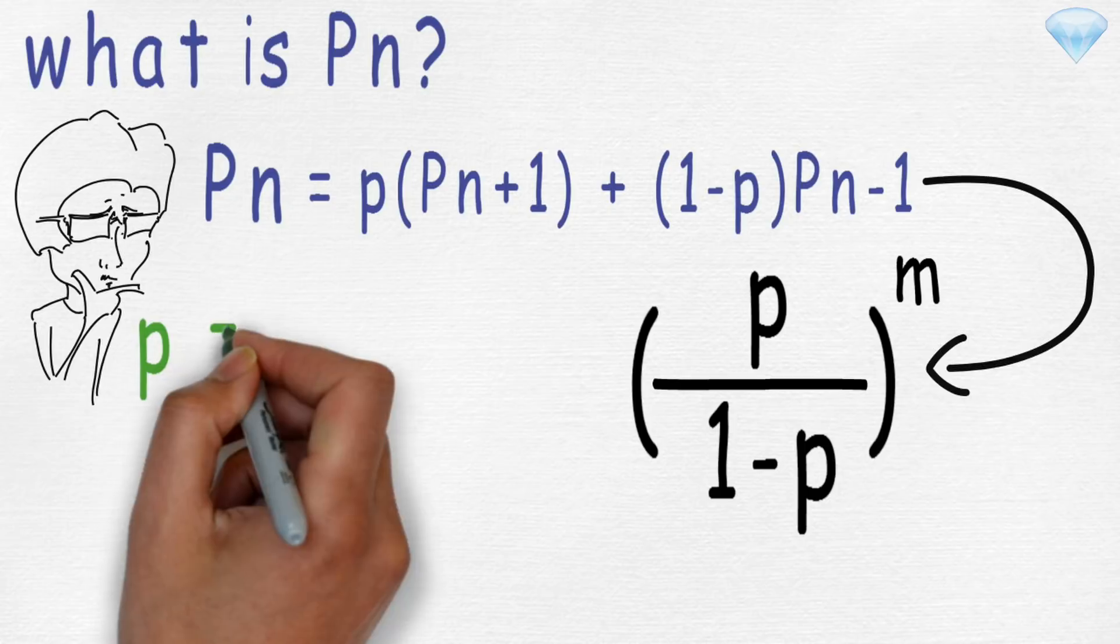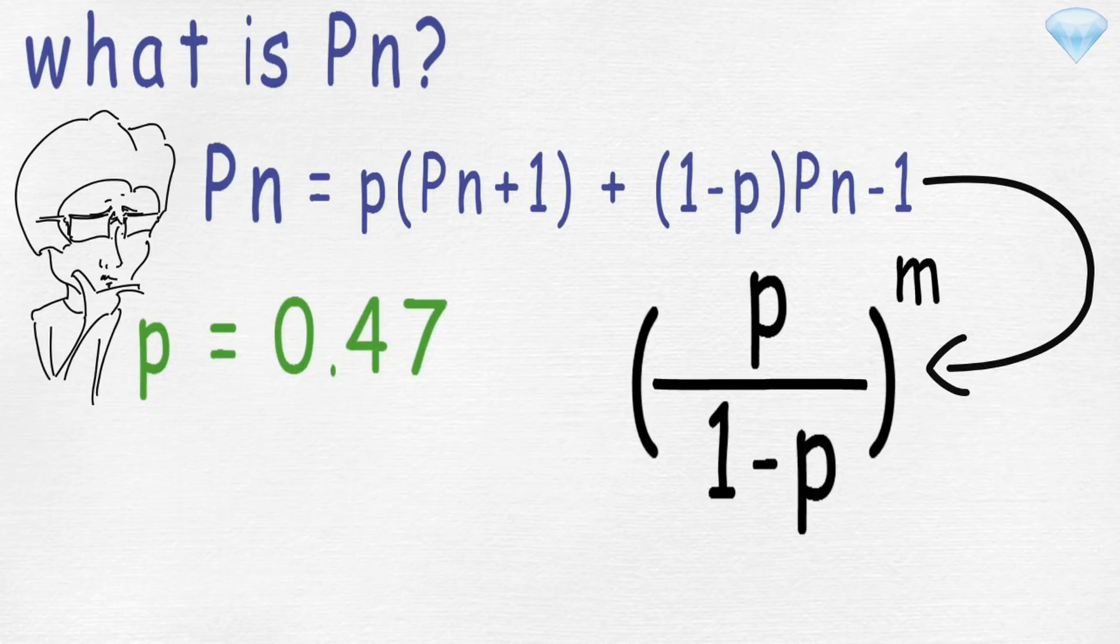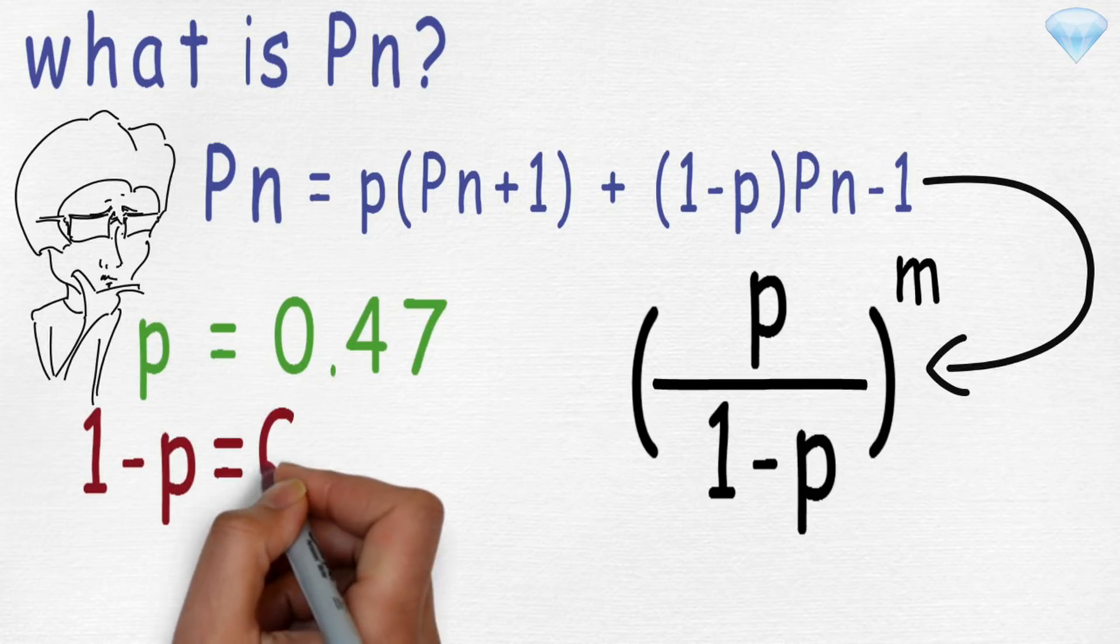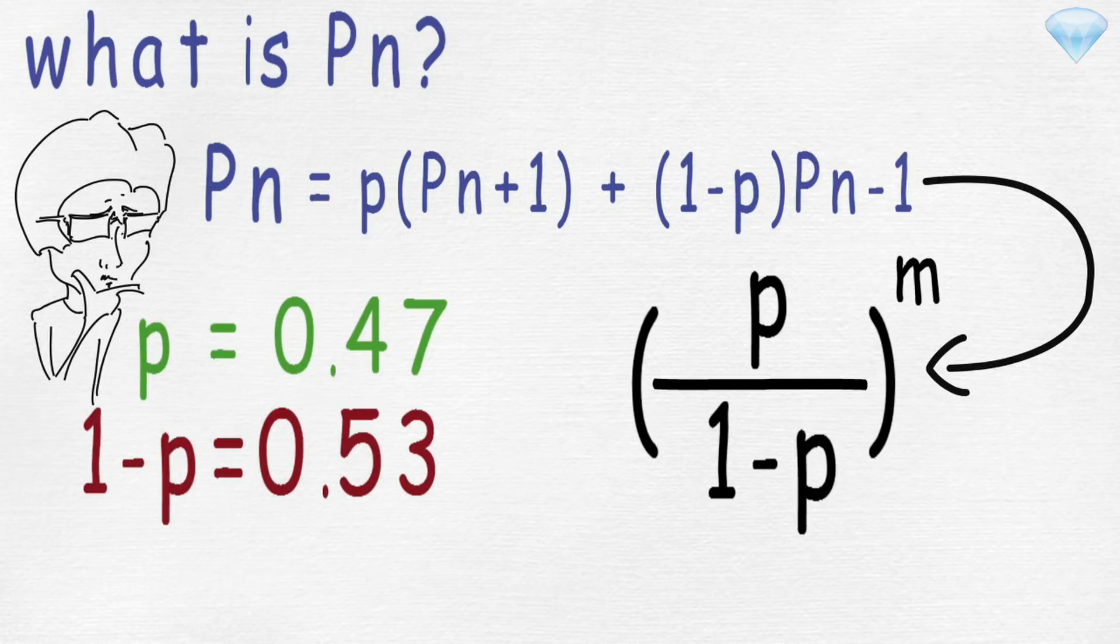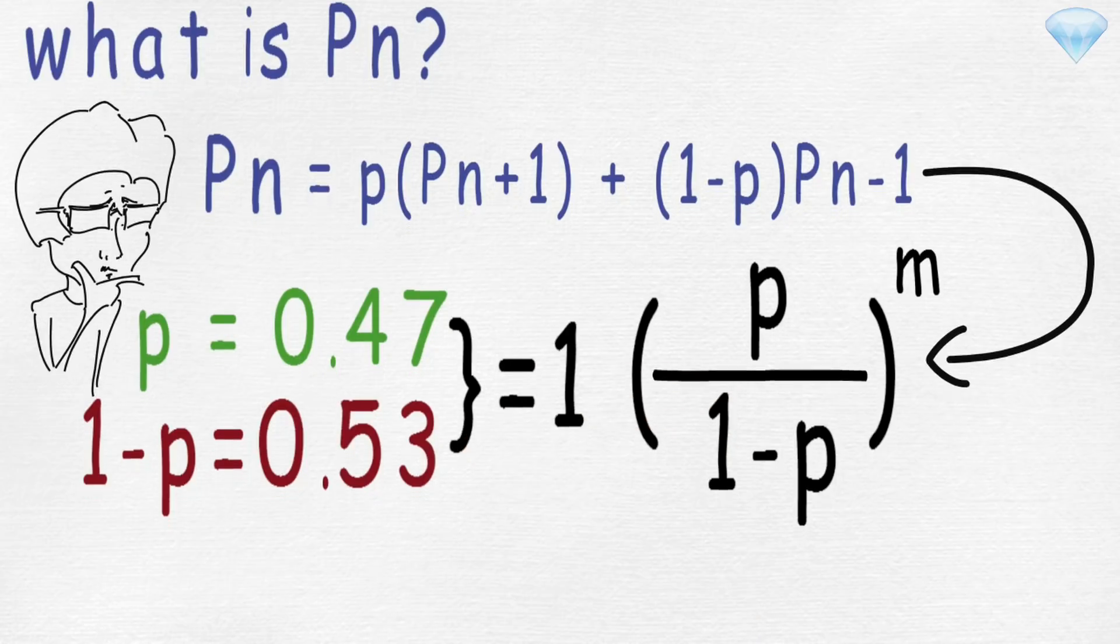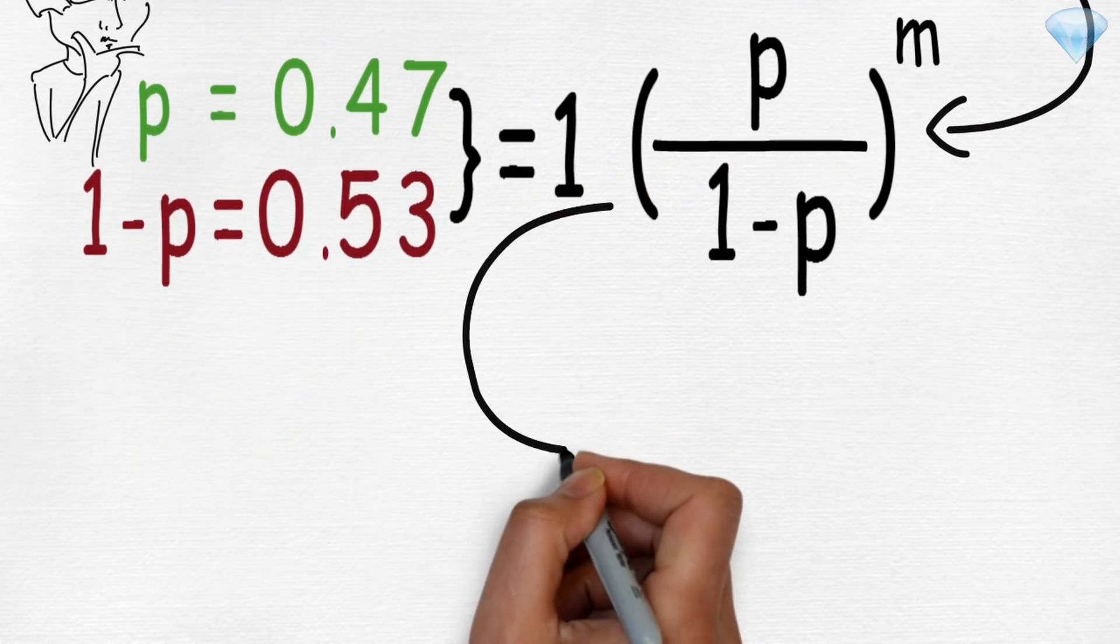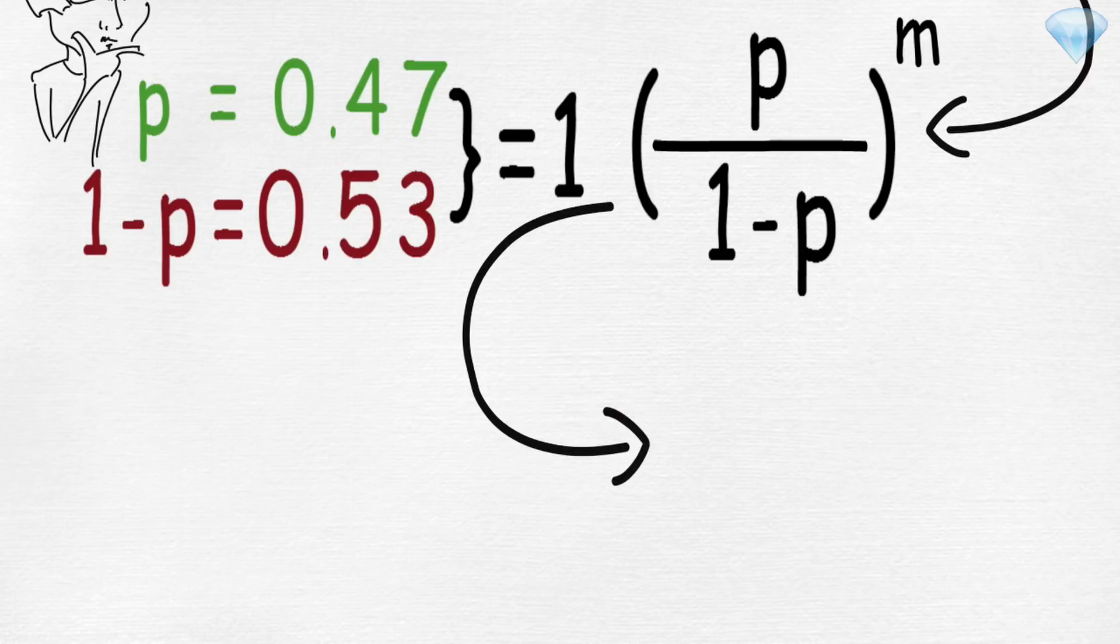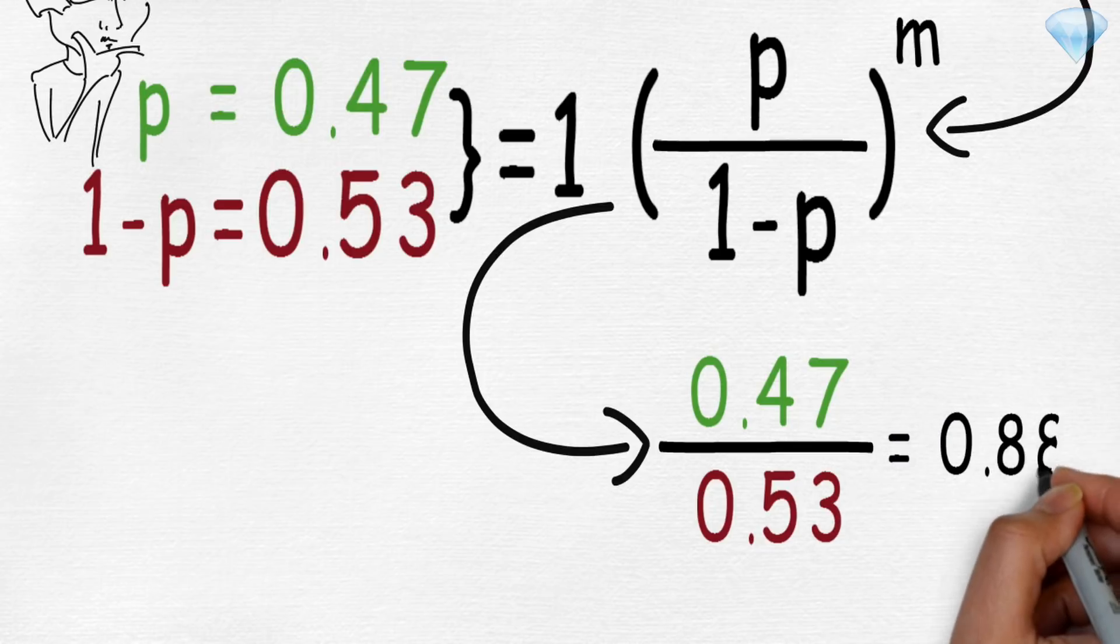So if probability of success equals 47% in our earlier example, then the probability of failure must be 53%. Remember, the sum of probabilities is always equal to 1. Therefore, p divided by 1-p equals 0.47 divided by 0.53, which equals 0.88.